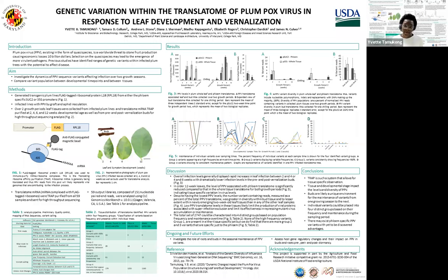$60 billion. That's how much the agricultural industry loses to plant diseases every year. Plant viruses are the second greatest contributor to these losses. One of these viruses is plum pox virus, first observed in plums in Bulgaria around 1992. This virus now devastates stone fruit worldwide.